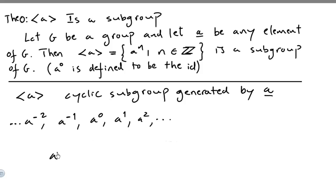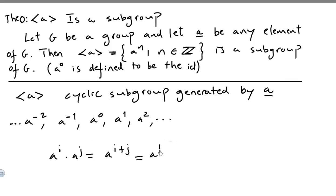Another important thing: A^i times A^j equals A^(i+j), and that equals A^(j+i), which equals A^j times A^i. This is very important.